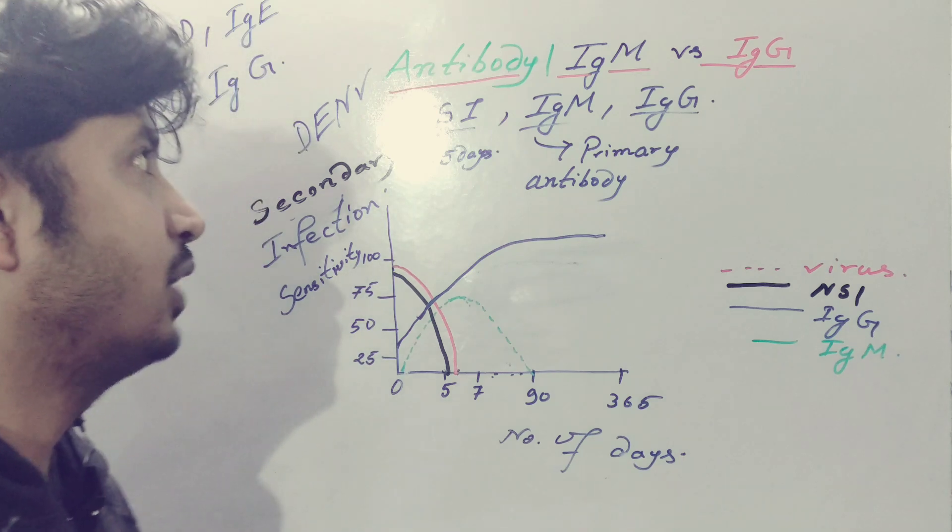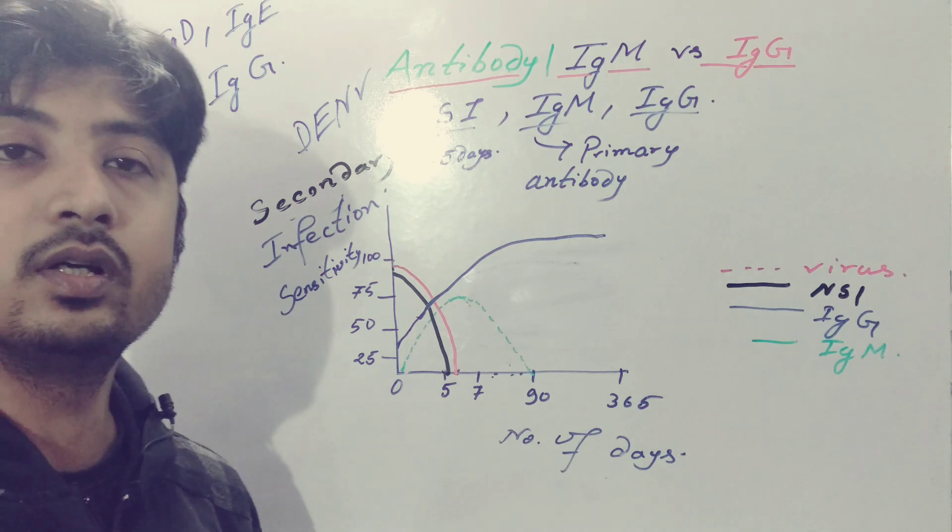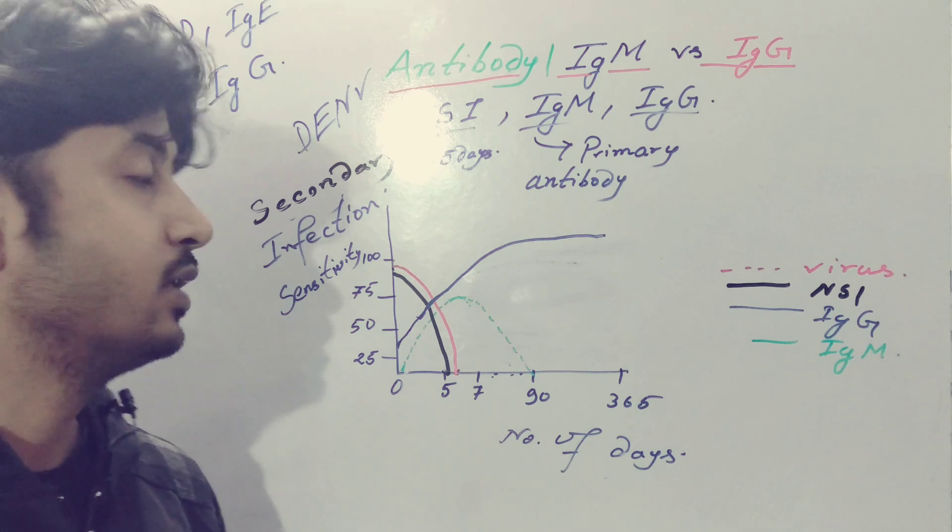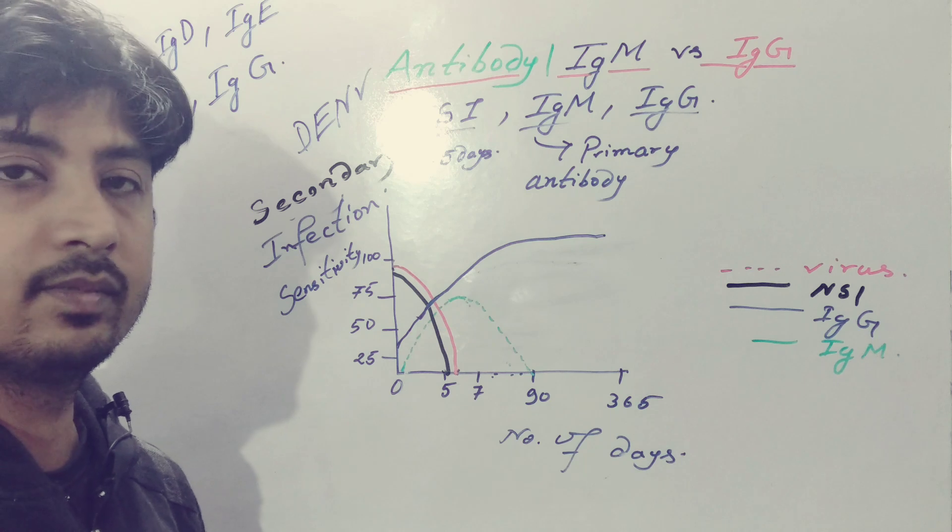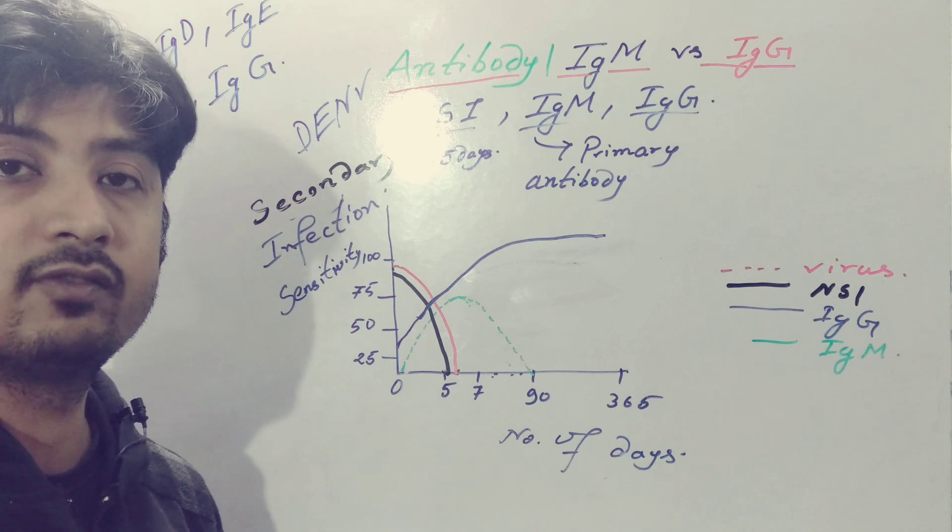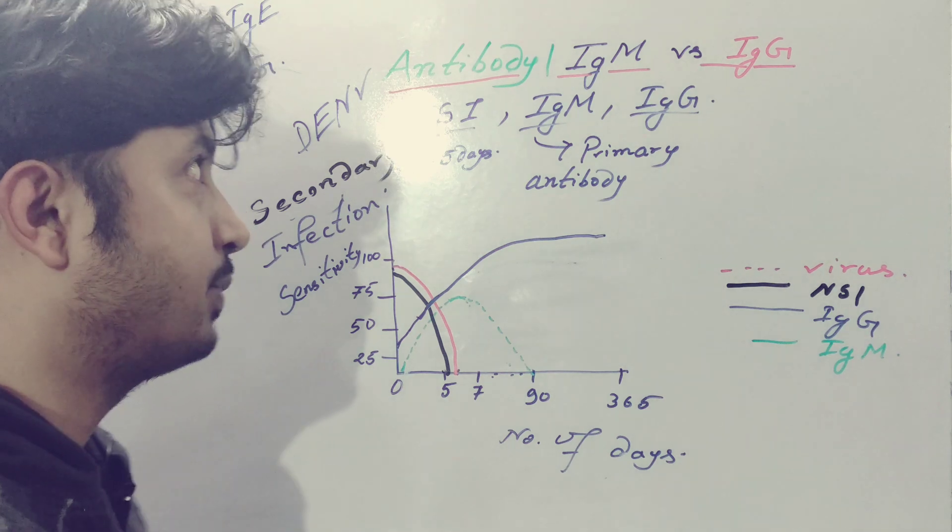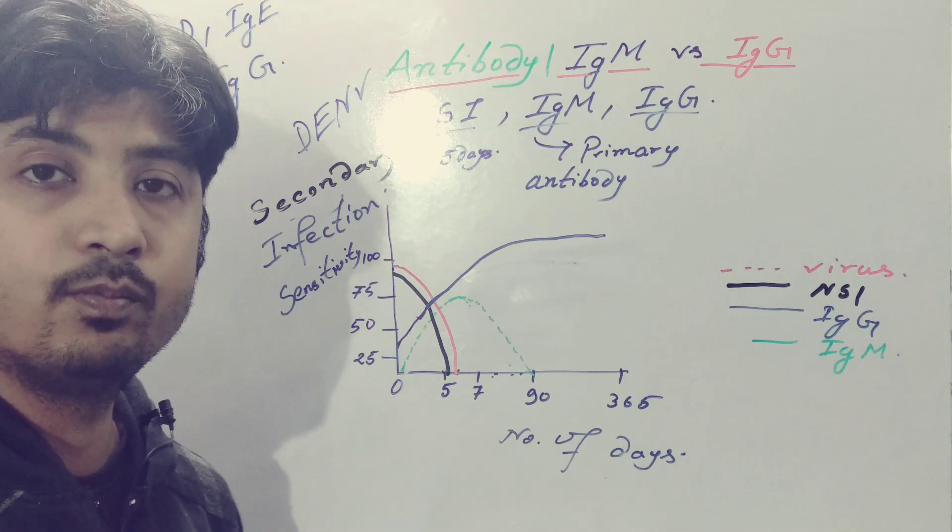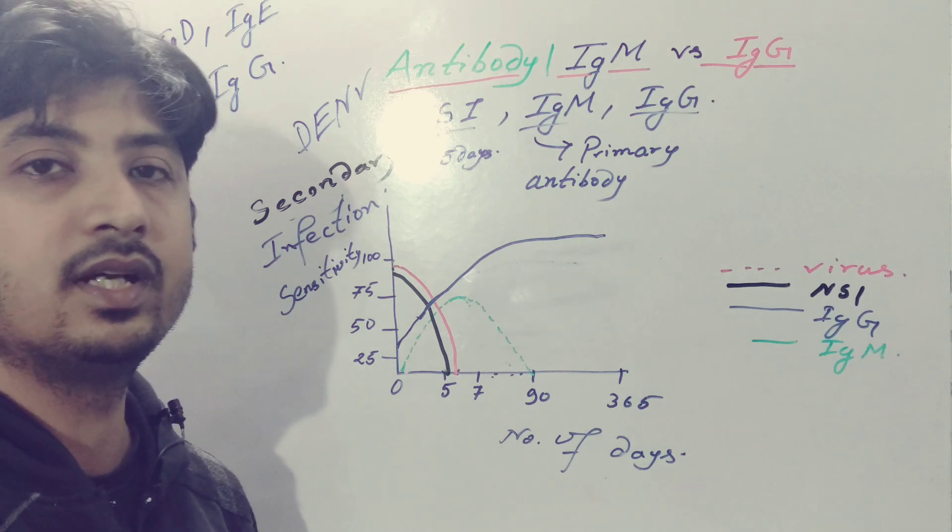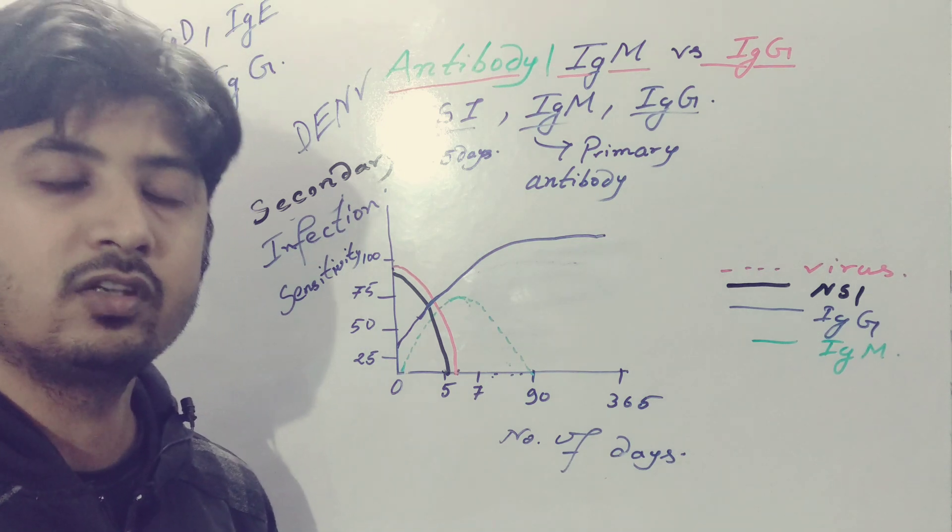IgM is a pentavalent antibody, larger in size, with a more drastic response. It can bind several antigens at the same time, so it's a primary response of our immune system. IgG is also a very crucial factor for memory antibody response for future response against viral or bacterial antigens. This is the part of IgM and IgG, and it's a very important thing you should remember for the clinical aspect. I hope it's clear. If you have any questions, please ask in the comment section. Thank you very much.